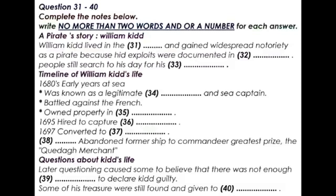In 1690 he was an established sea captain and ship owner in New York City, where he owned property. At various times he was dispatched by both New York and Massachusetts to rid the coast of enemy privateers. In London in 1695 he received a royal commission to apprehend pirates who molested the ships of the East India Company in the Red Sea and in the Indian Ocean. Kidd sailed from Deptford on his ship the Adventure Galley on February 27, 1696, called at Plymouth, and arrived at New York City on July 4 to take on more men.